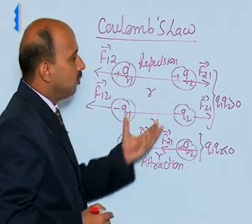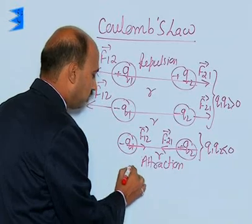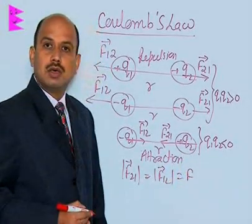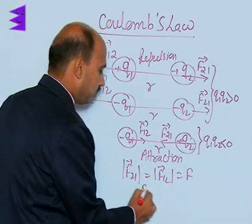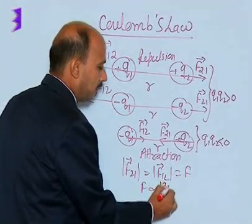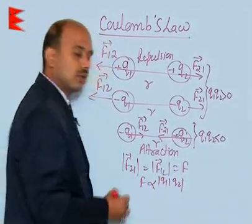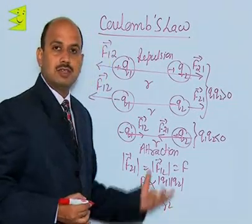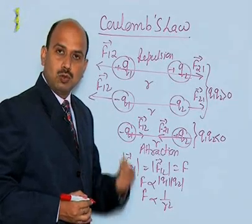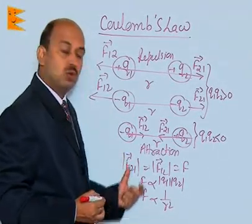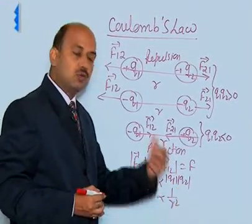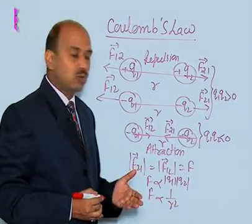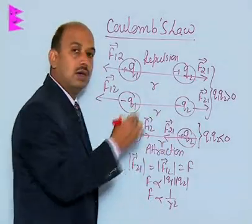The magnitude of these two mutual forces — F21 is equal to F12 is equal to F. The magnitude of these two forces is directly proportional to the product of the magnitude of the charges and inversely proportional to the square of the distance between these two charges. According to Coulomb's law, the force acting between two point charges acts along the line joining the centers of the two charges.